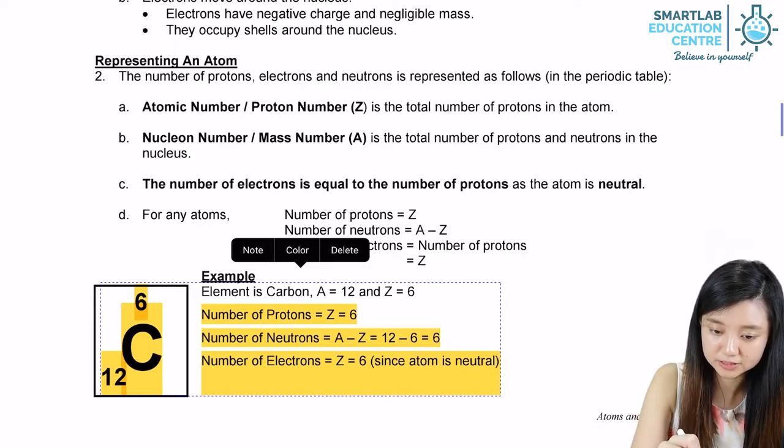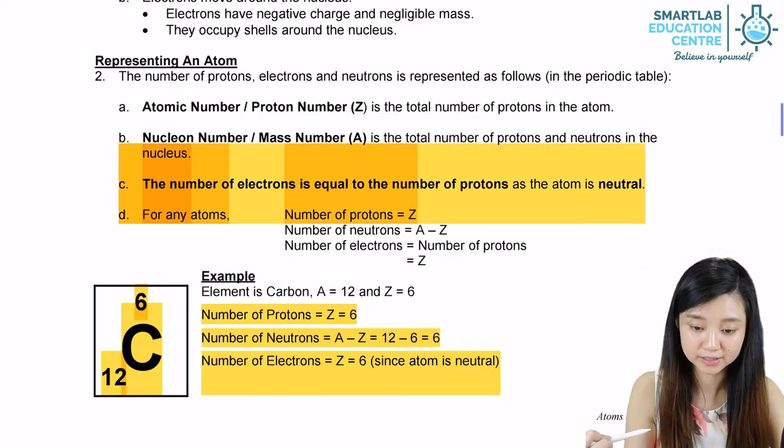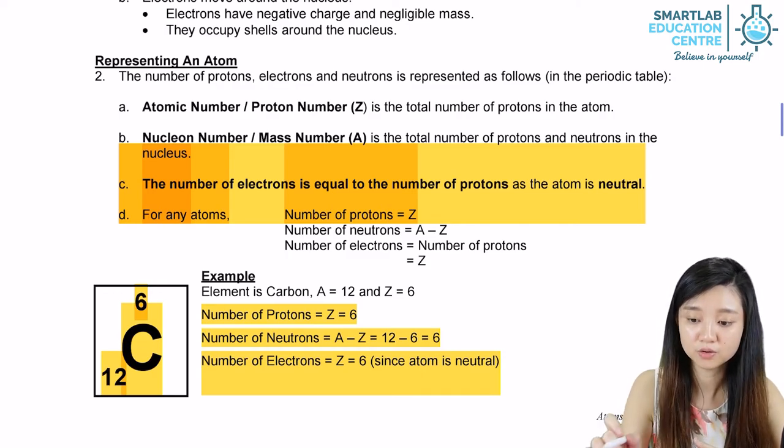As for the electrons, they are actually equal to the number of protons. And therefore, since the number of negative charge and positive charge is equal, we say that the atom is a neutral atom.